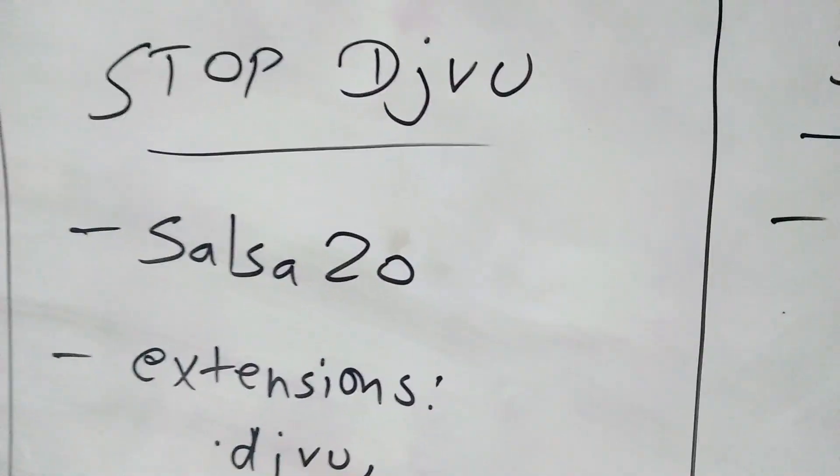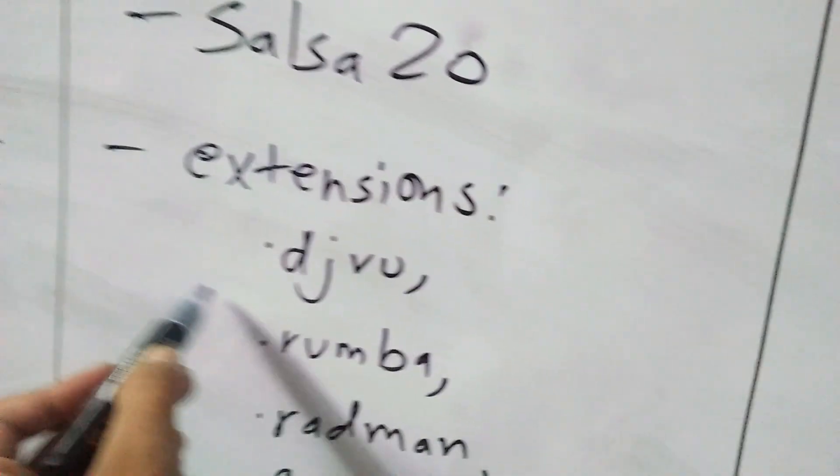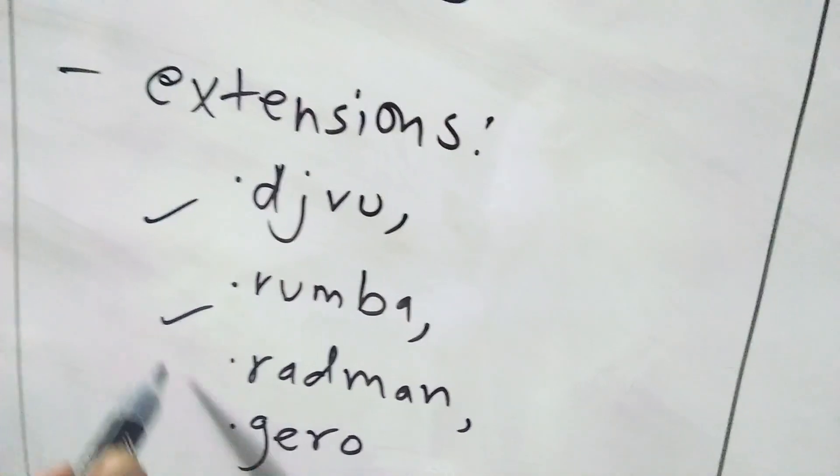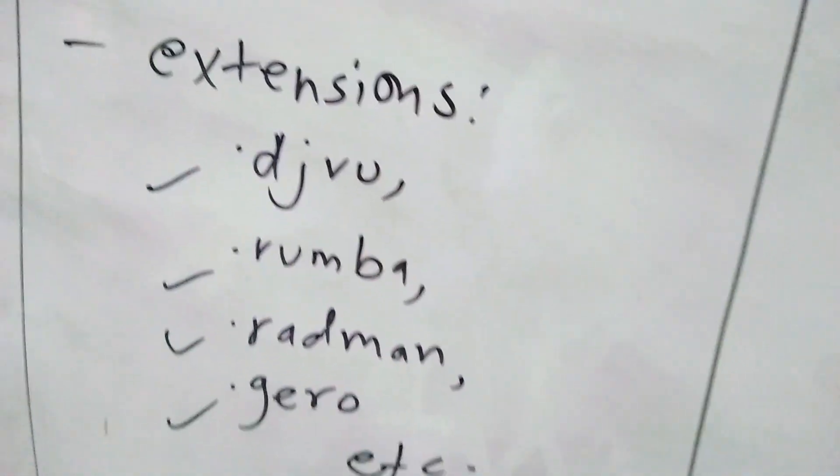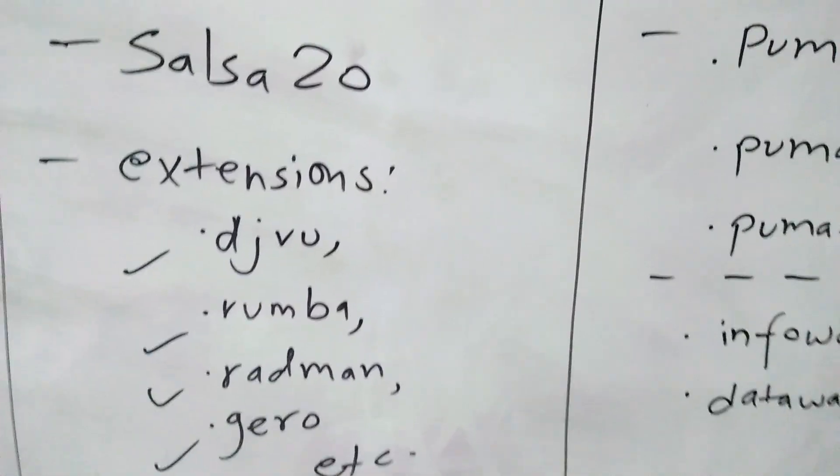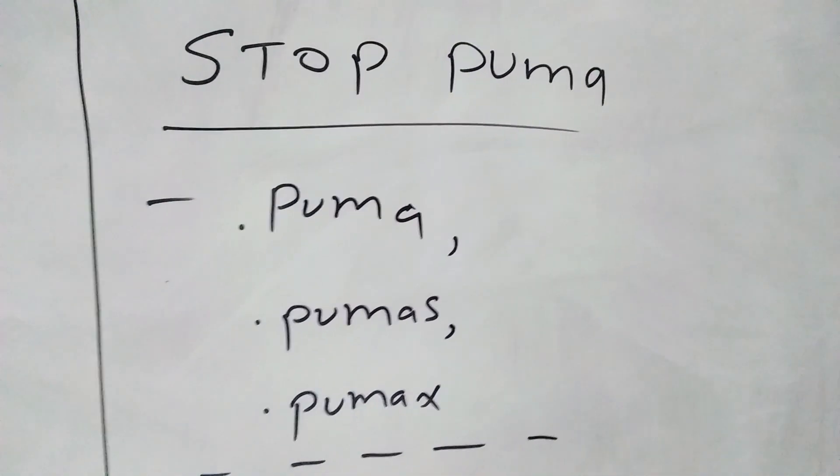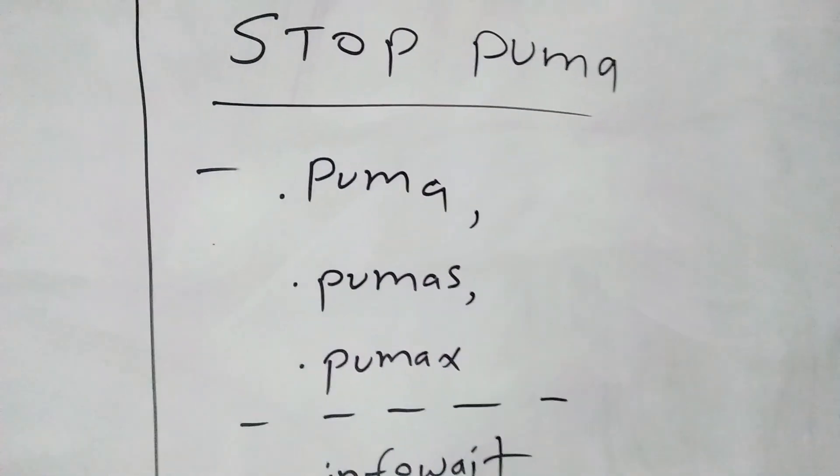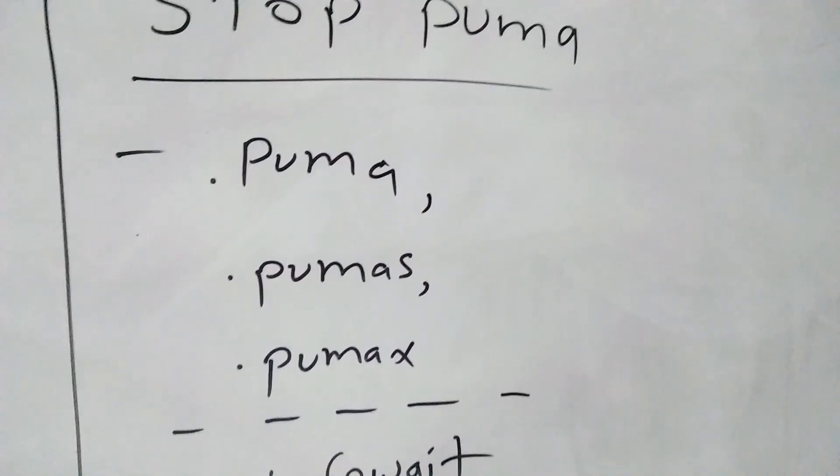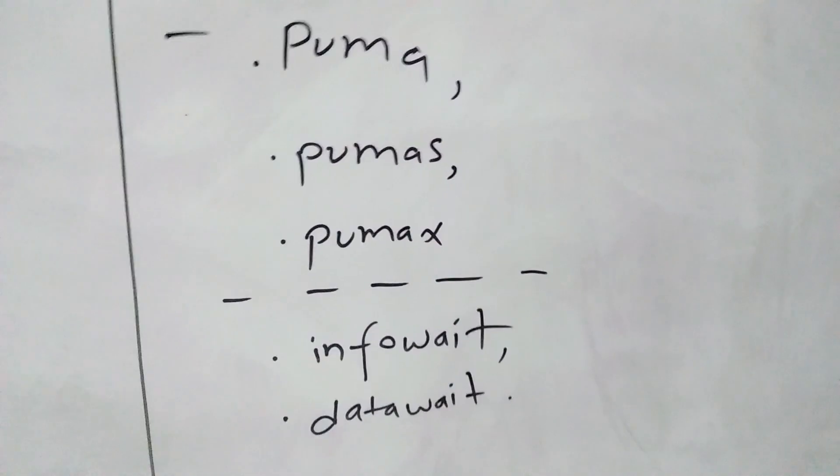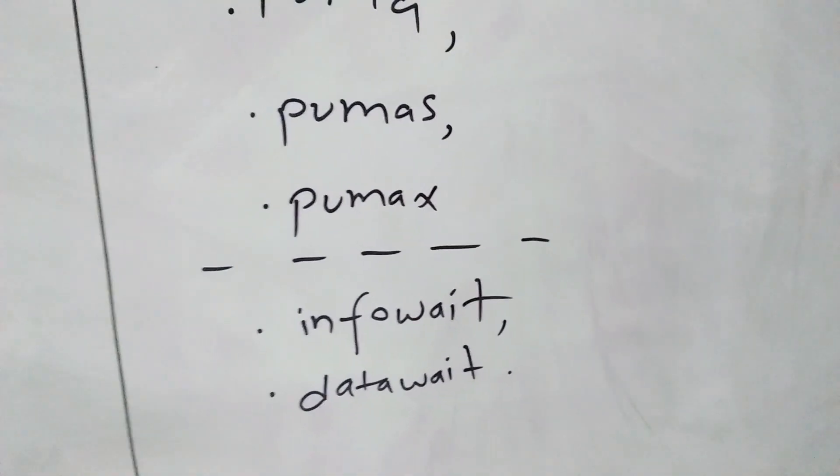Extensions include .djvu, .rumba, .redman, .gero, and many others. In case of Stop Puma, extensions attached are .puma, .pumas, .pumax, or also .info weight and .data weight.